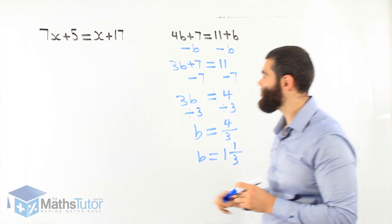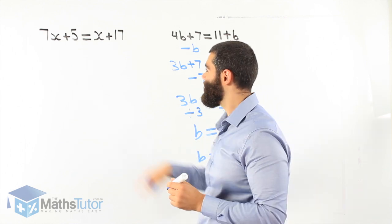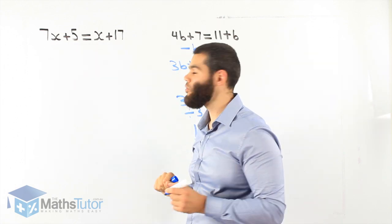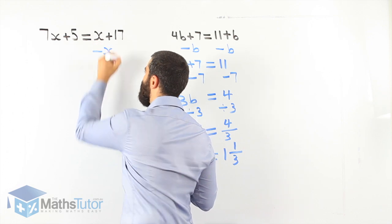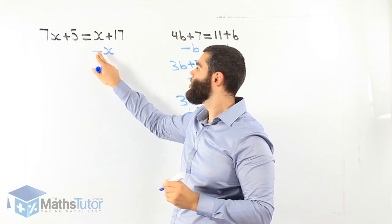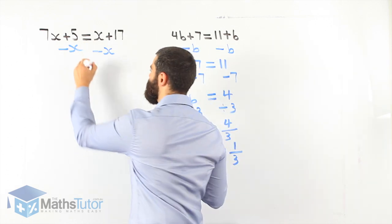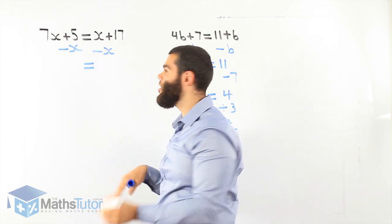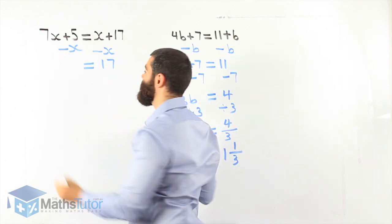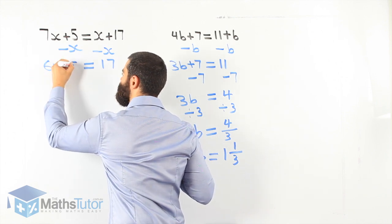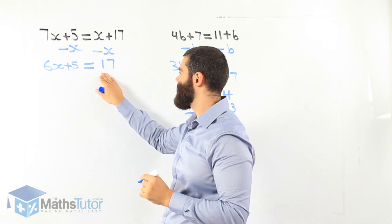Let's do another one. 7x plus 5 equals x plus 17. Again, we have pronumerals on both sides. We want to get rid of the one on the right — start with that one first, always. Minus x, because it's a positive x: minus x on one side, minus x on the other. x minus x is gone, we're left with 17. 7x take away x is 6x plus 5. That's our new equation.